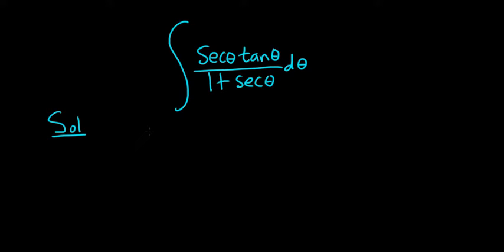We know that the derivative of secant is secant tangent. So maybe it's a good idea to let u be the entire bottom piece. So we'll start by letting u be equal to 1 plus secant theta.